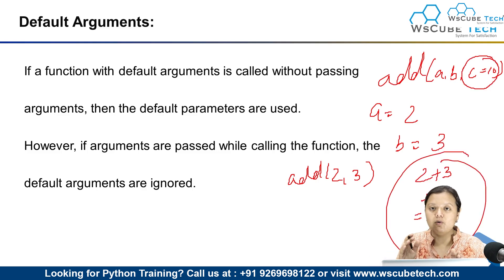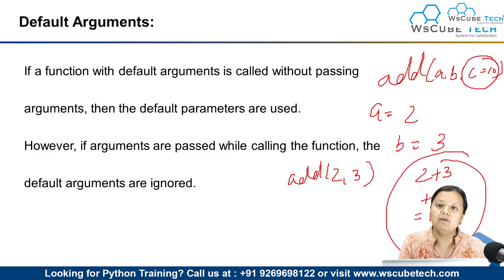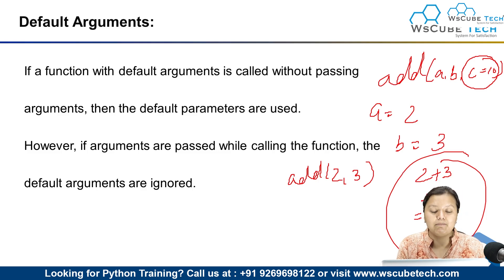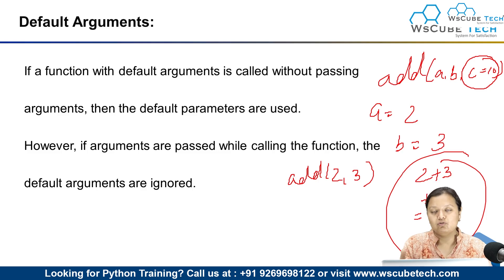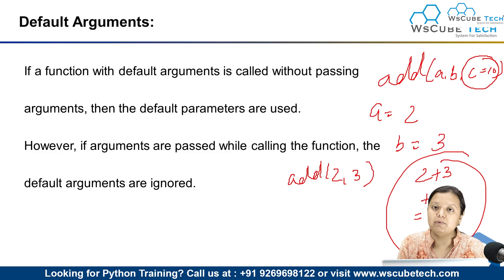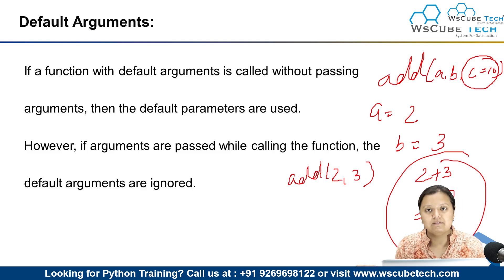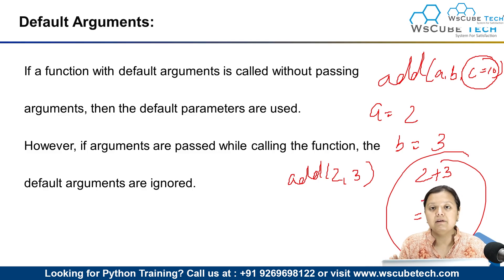So the default argument filled in where you had not provided a parameter. The error was also removed, and the execution which was stopped in between is now completed by providing the default argument.